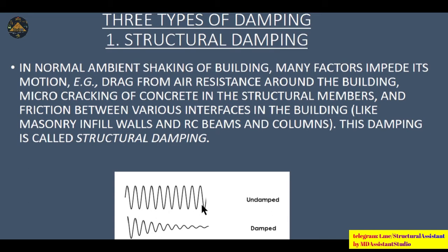Now we should understand what are the types of structural damping. Number one is structural damping - during normal ambient shaking of the building, many factors impede its motion: drag from air resistance around the building, micro-cracking of concrete in structural members, and friction between various interfaces in the building like masonry infill walls, RCC beams, and columns. That damping is called structural damping. The first graph shows no damping, then the frequency and amplitude of motion decreases almost to zero - so the motion got damped.